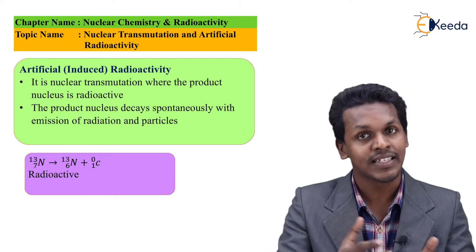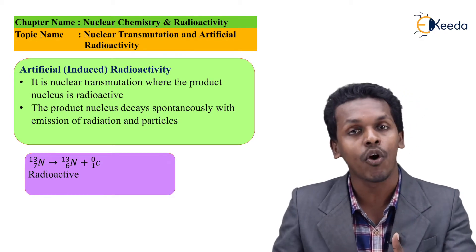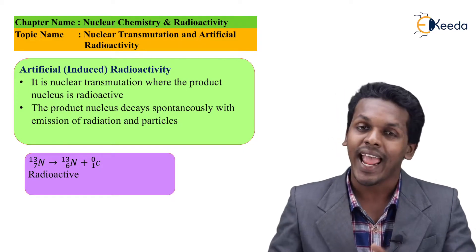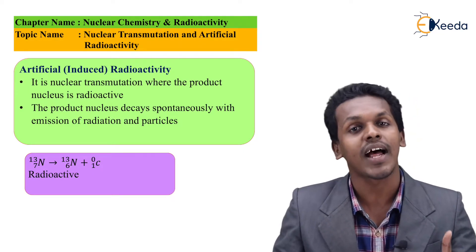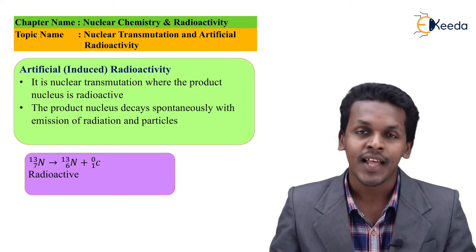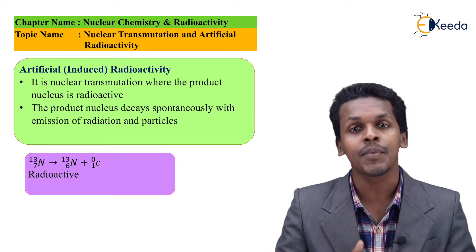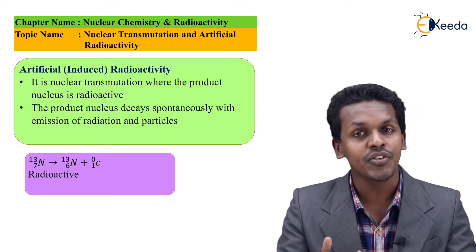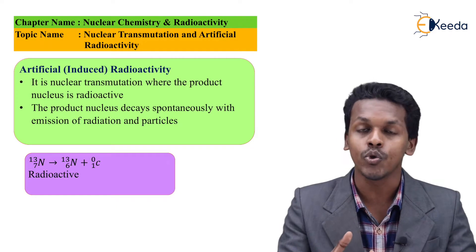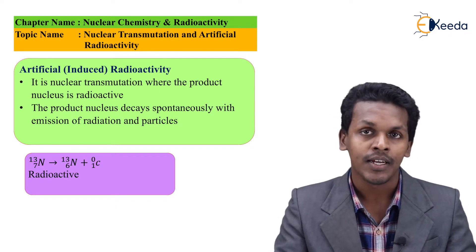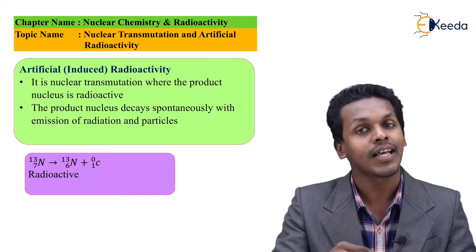But this radioisotope is unstable and will form a stable compound. This is how we transition to artificial radioactivity. Artificial radioactivity is the transformation of this radioisotope to another nuclide by emitting another particle.